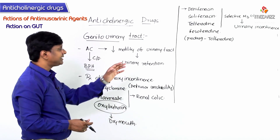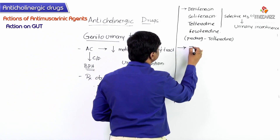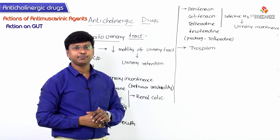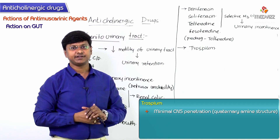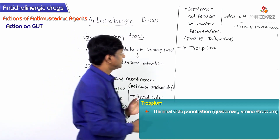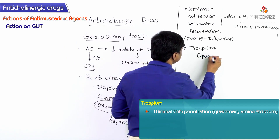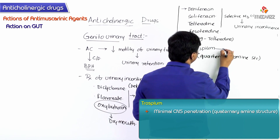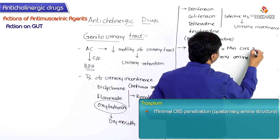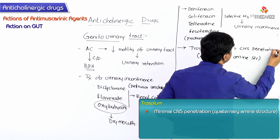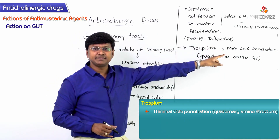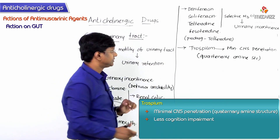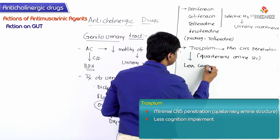Another important anticholinergic drug is Trospium. Trospium has very minimal CNS penetration because of its quaternary amine structure. Because of this minimal CNS penetration, Trospium causes a lesser risk of cognitive impairment.